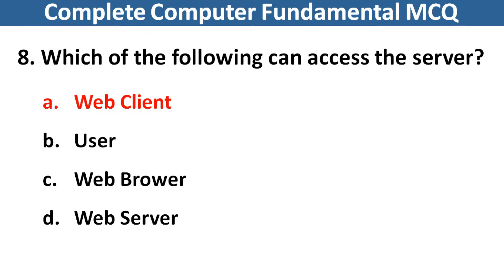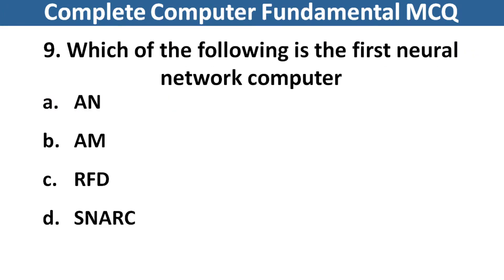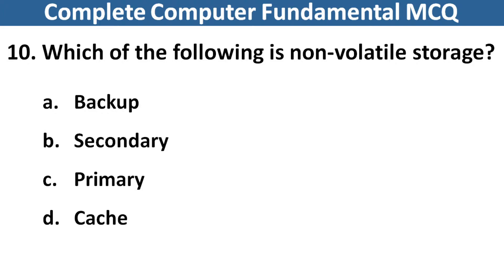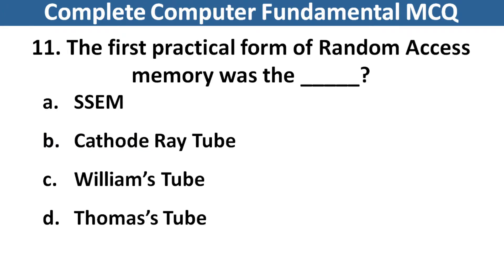Which of the following is the first neural network computer? Right answer is option D. Next question: Which of the following is non-volatile storage? Right answer is option B, Secondary. Next question: The first practical form of a random access memory was the dash dash. Right answer is option C, Williams Tube.